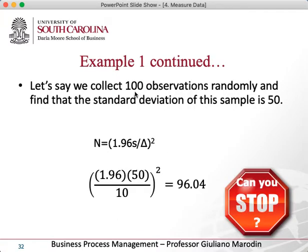But then I collected 100 observations and my standard deviation was 50. So if I plug 50 into the formula, I get a sample size of 96.4. The question is: should I stop? Do I have enough, or do I need to collect more data? I already collected 100, and the sample size calculation says I need at least 96. Do I have 96 or more? Yes, I have 100. So can I stop? Yes, I can stop.